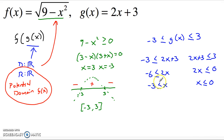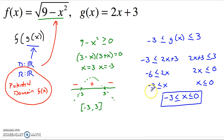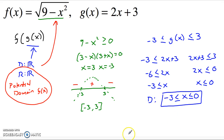Combining both sides: negative 3 less than or equal to x less than or equal to 0. This is the restriction on the domain. We must give g of x values from negative 3 to 0, so it only outputs numbers from negative 3 to 3, which then become the input for f of x. Now for the range: the square root function is going to see everything from negative 3 to 3, which is everything it's allowed to see.